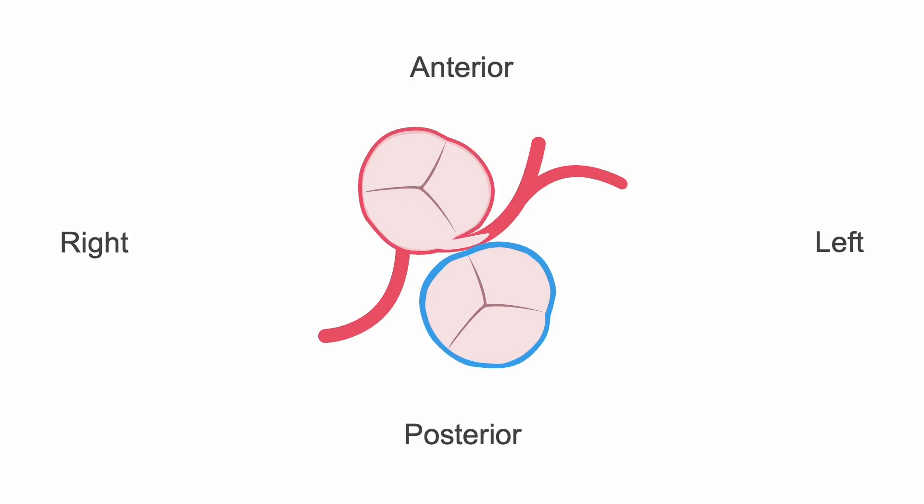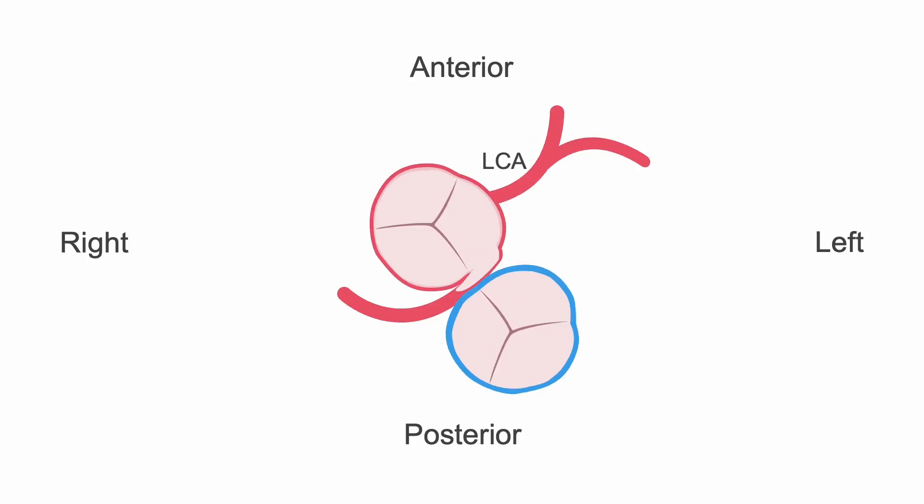Coronary artery anomalies are relatively common in TGA and it is of high importance to the surgeon to know the anatomy of the coronary arteries to avoid injury or kinking during coronary re-implantation. There are many different variations of abnormal coronary patterns in TGA, and some patterns increase the surgical risk. The higher-risk patterns include a single right coronary artery with an intramural left coronary artery coursing between and within the tissue of the great vessels, or a single left coronary artery with an intramural right coronary artery course.